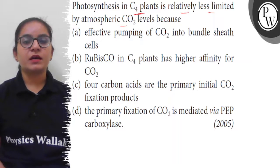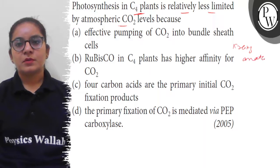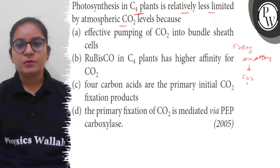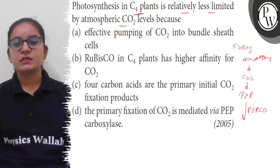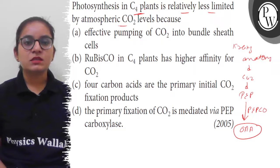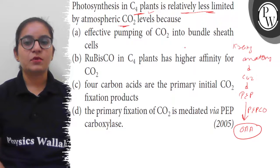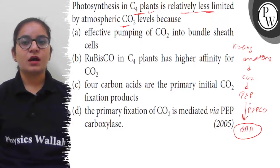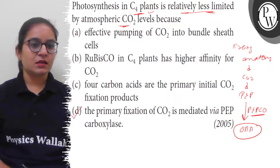The primary acceptor of atmospheric carbon dioxide is phosphoenolpyruvate, in the presence of phosphoenolpyruvate carboxylase, and it converts to oxaloacetic acid — the 4-carbon compound. Photosynthesis in C4 plants is relatively less limited by atmospheric carbon dioxide because the primary fixation occurs via PEP carboxylase. The correct answer is option D.